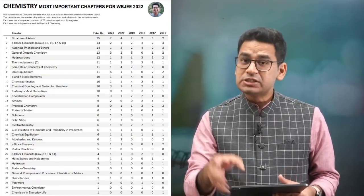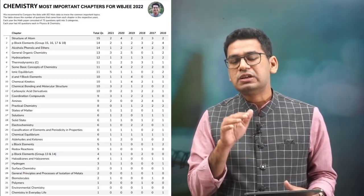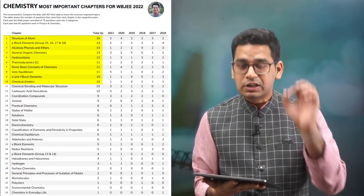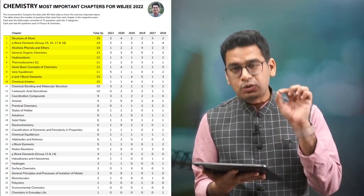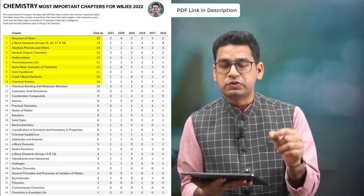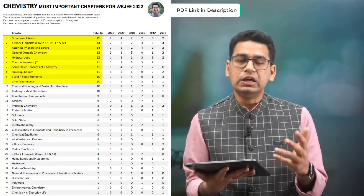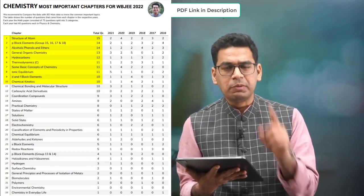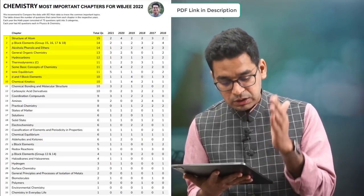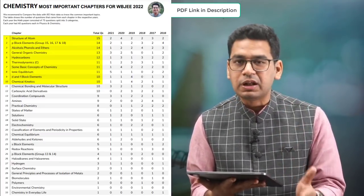Now let's talk about chemistry. There is a stark difference with respect to JE Mains. The top chapter in WBJE is atomic structure, whereas it was coordination compounds in JE Mains. Coordination compounds in this list is at 13th position with only nine questions total. Out of 240 questions analyzed — 40 questions per paper, six papers — only nine questions came from coordination compounds. In WBJE, the top 10 chemistry chapters are: atomic structure, P block, alcohol phenol, general organic chemistry, hydrocarbons, thermodynamics, basic concepts of chemistry (mole concept), ionic equilibrium, DNF, and chemical kinetics.